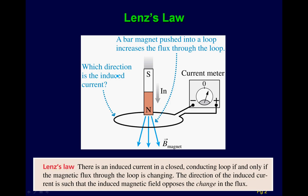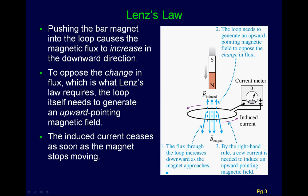In Lenz's Law, the gist is that nature likes to keep the same magnetic flux going through a loop. If the magnetic flux changes, nature will create a magnetic field that opposes that change in flux.